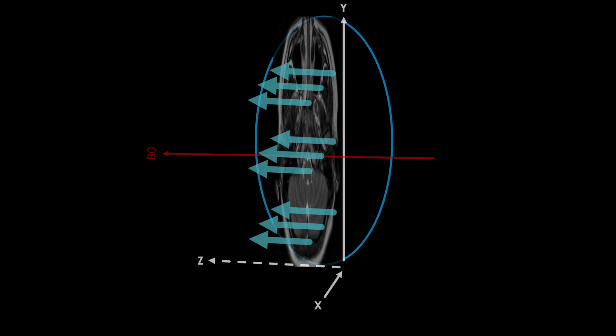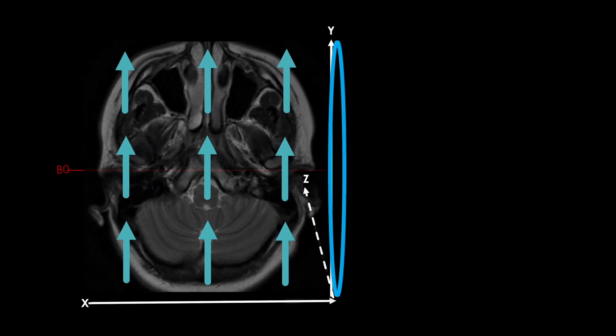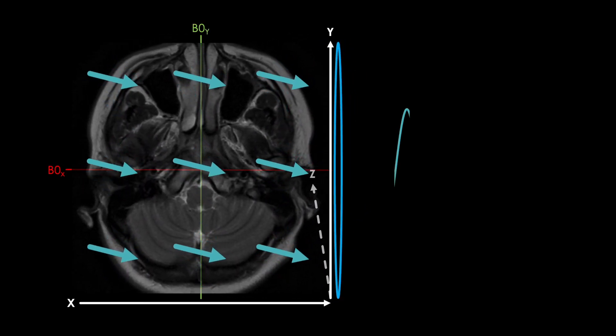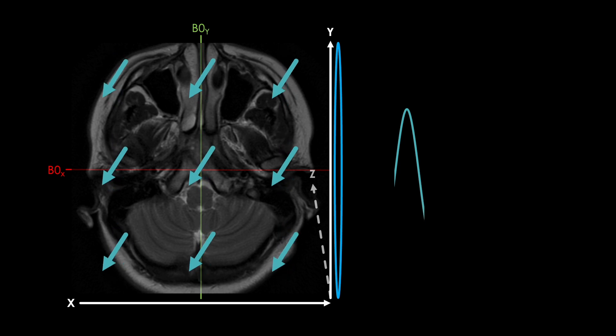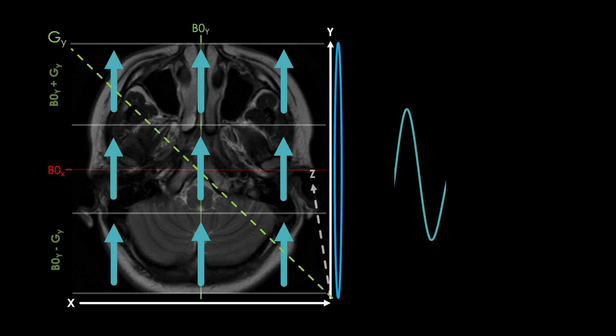Let's go back once again to the moment we turn on this phase encoding gradient. Before the gradient is applied, the only magnetic field present is B0, our main magnetic field, and therefore the protons are precessing with the same Larmor frequency, staying in phase with one another. But the moment we apply this phase encoding gradient GY across the Y axis, something happens. The protons in the top row see a higher magnetic field than the middle row, which is higher than the bottom row. And as always, our Larmor frequency and therefore the rate at which these rotate depend on the magnetic field these protons are in.